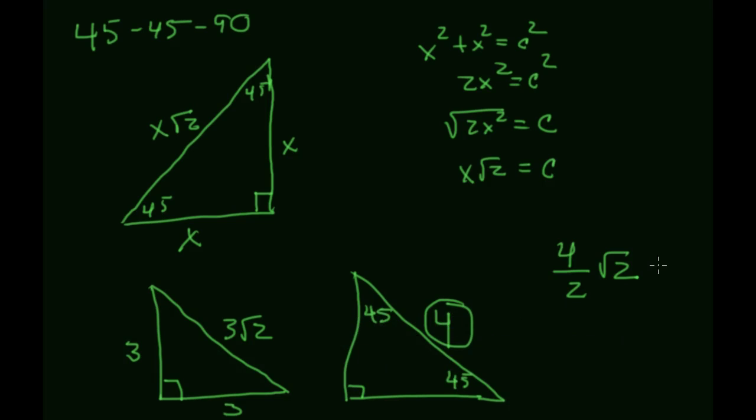Let's simplify that, because that just becomes 2 radical 2. So that's 2 radical 2, because 4 divided by 2 is 2, and this is 2 radical 2.